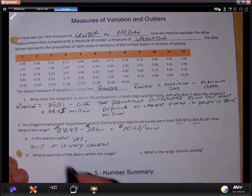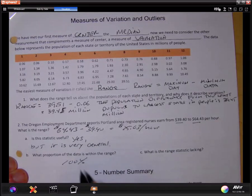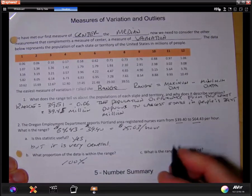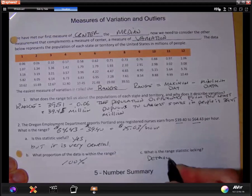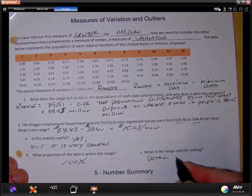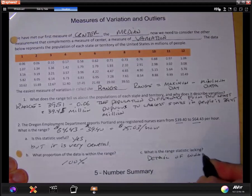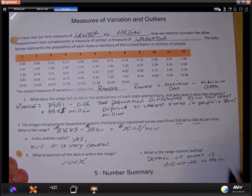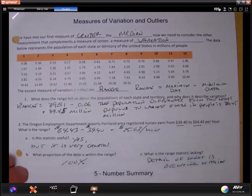What proportion of data is within the range? Well, 100%. What is the range statistic lacking? Detail. What is occurring within, between the highest and the lowest. So it's a nice starting point.